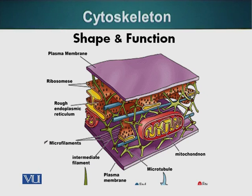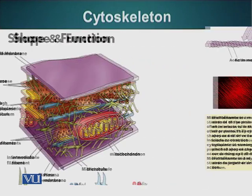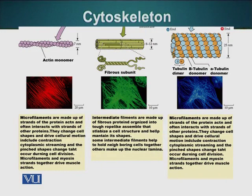Cell function is very important and dependent upon the cell's shape. Cell shape is basically the responsibility of the skeleton present in the cell. The cell has three different types of skeletal elements: microfilaments or actin filaments, intermediate filaments, and microtubules. All these skeletal elements are polymers of smaller molecules.